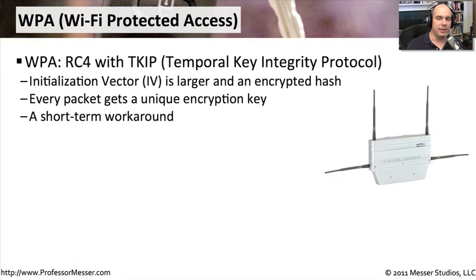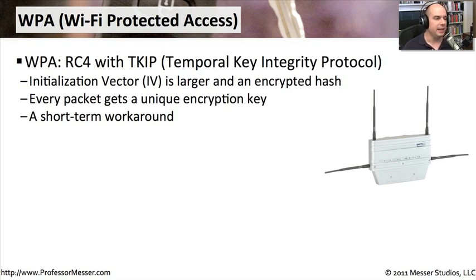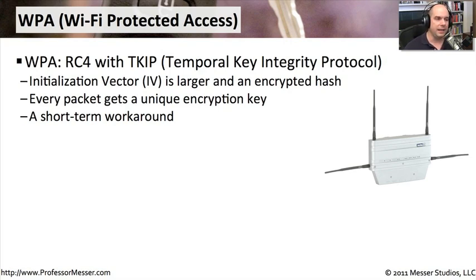When we found out that WEP was not going to be a good encryption method, we scrambled to find a replacement, and what we came up with was WPA — Wi-Fi Protected Access. This was RC4, which was the cipher used with WEP, but it included a new TKIP — Temporal Key Integrity Protocol — mechanism, and it sent the initialization vector across the network as an encrypted hash, which was not being done before.